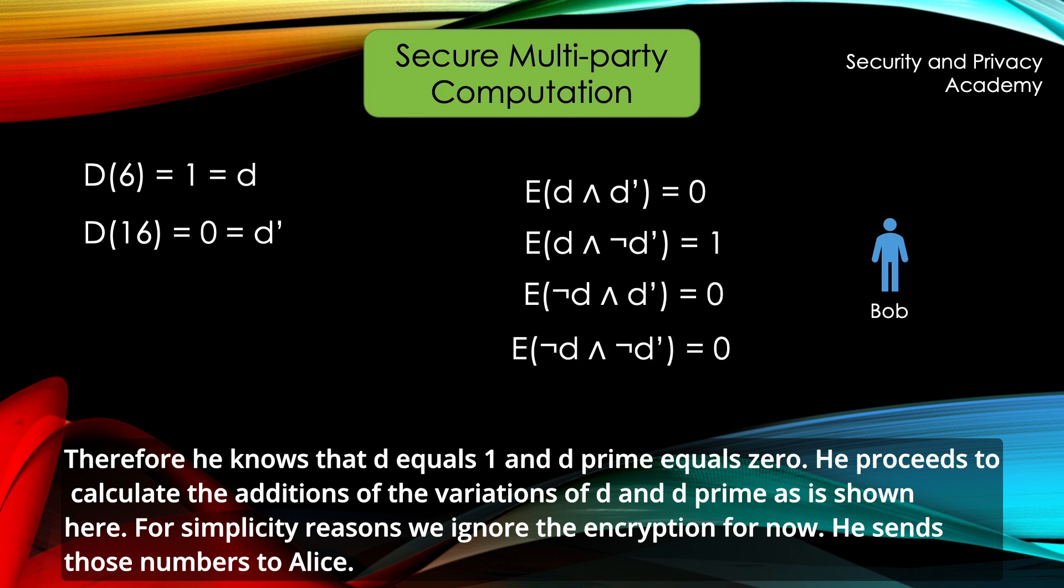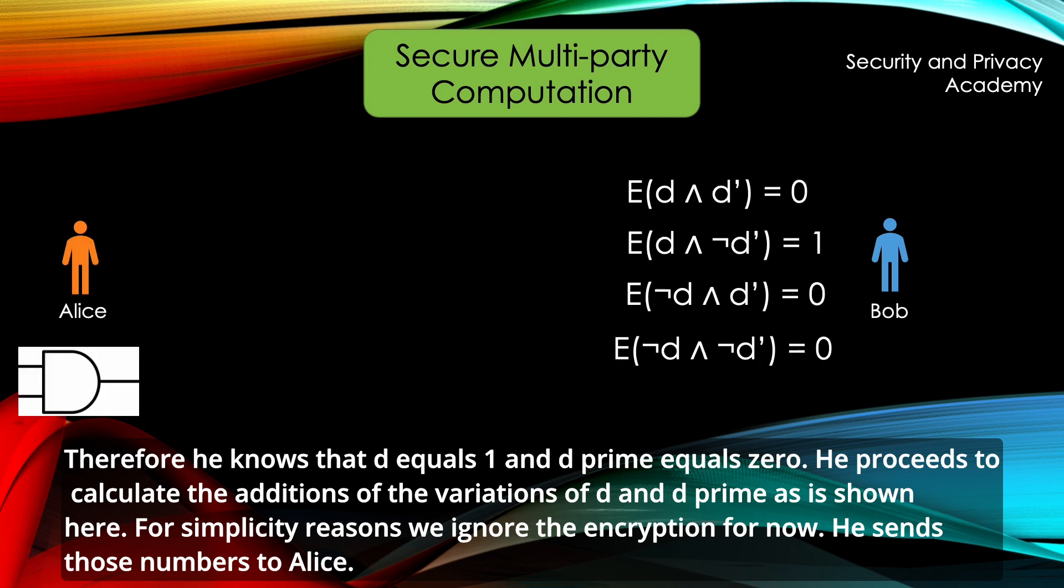For simplicity reasons, we ignore the encryption for now and he just sends these numbers to Alice.